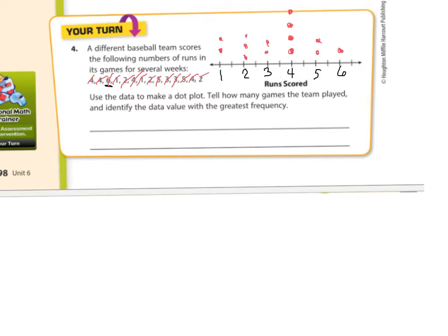Now really you guys, it should be neater than this. All of the ones that go up to two dots should be pretty much on the same line, like equal with each other. You can easily tell which one had the most, tell how many games a team played and identify the data value with the greatest frequency. So the number of games played was one, two, three, four, five, six, seven, eight, nine, ten, eleven, twelve, thirteen, fourteen games. And then the greatest frequency is four because there's more fours than everything else.